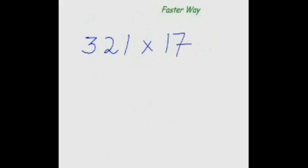So the answer is 18 plus 1 is 19, 7, 6, 8. This is what the answer is. Now you multiply 321 with 17, and even if you don't know the table of 17, that doesn't make any difference.